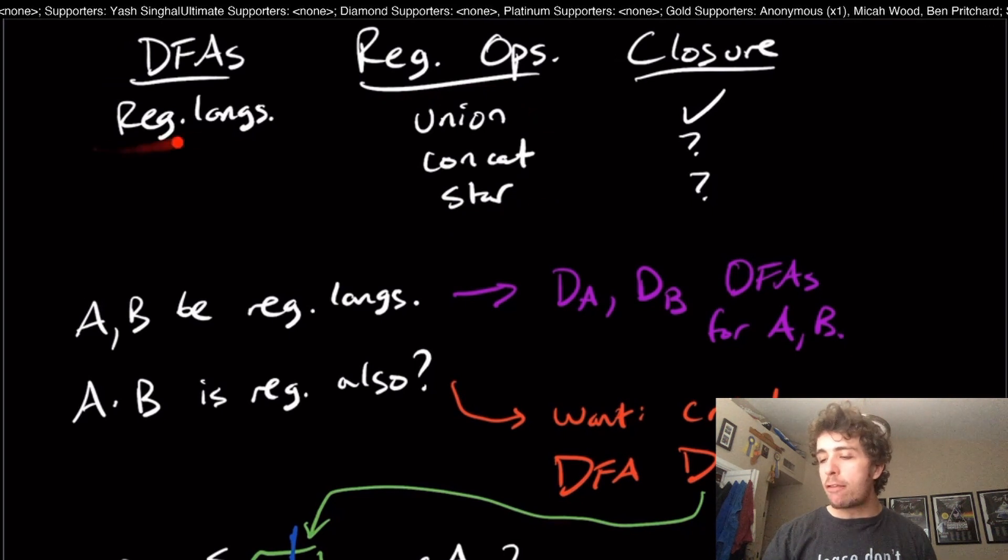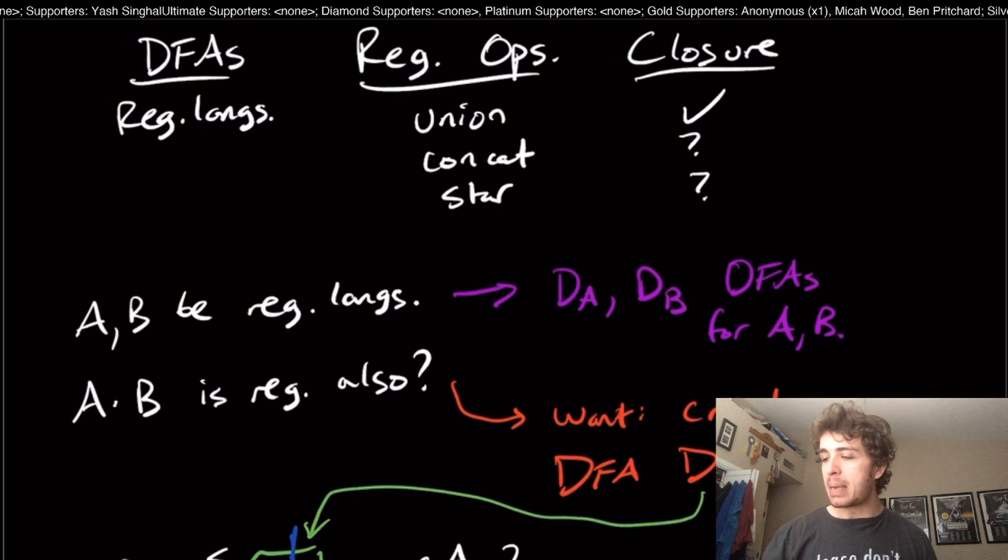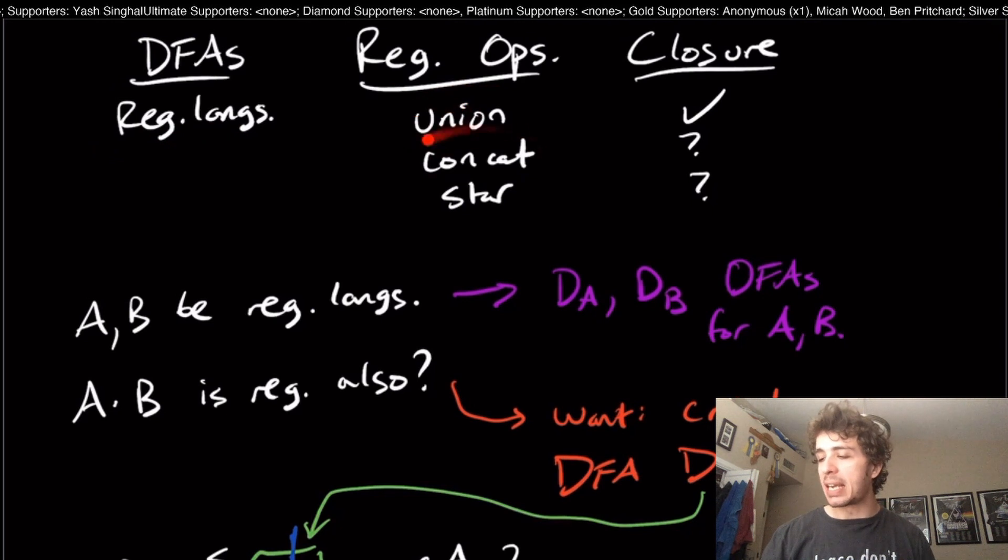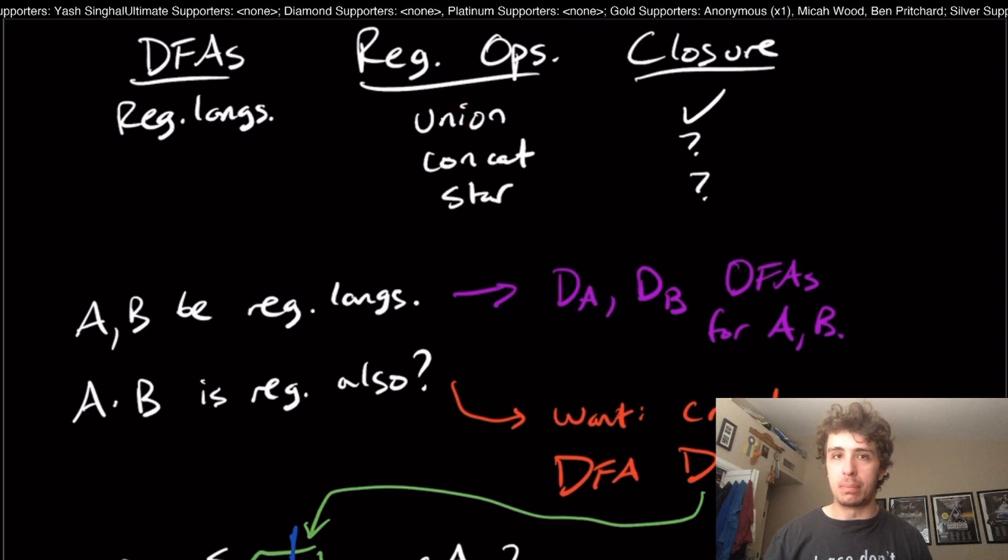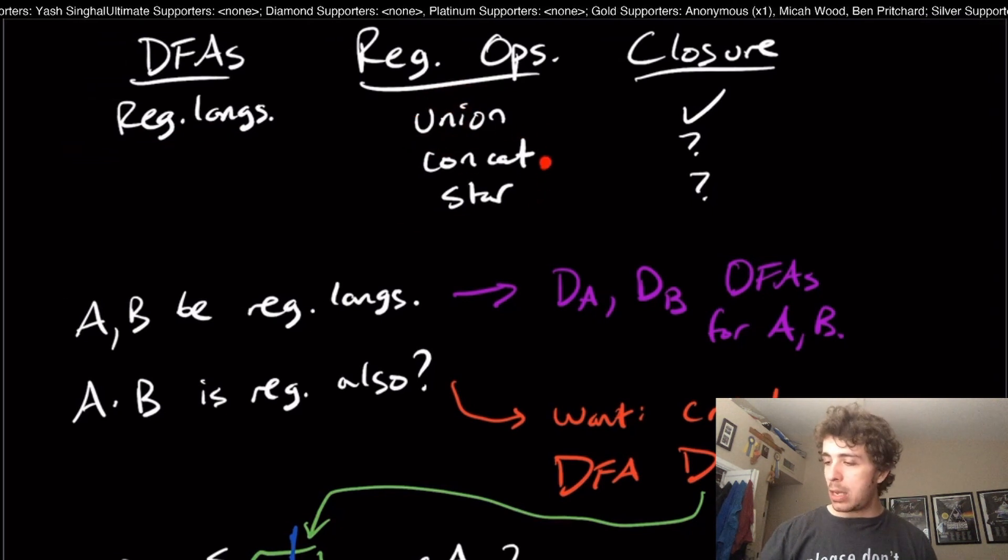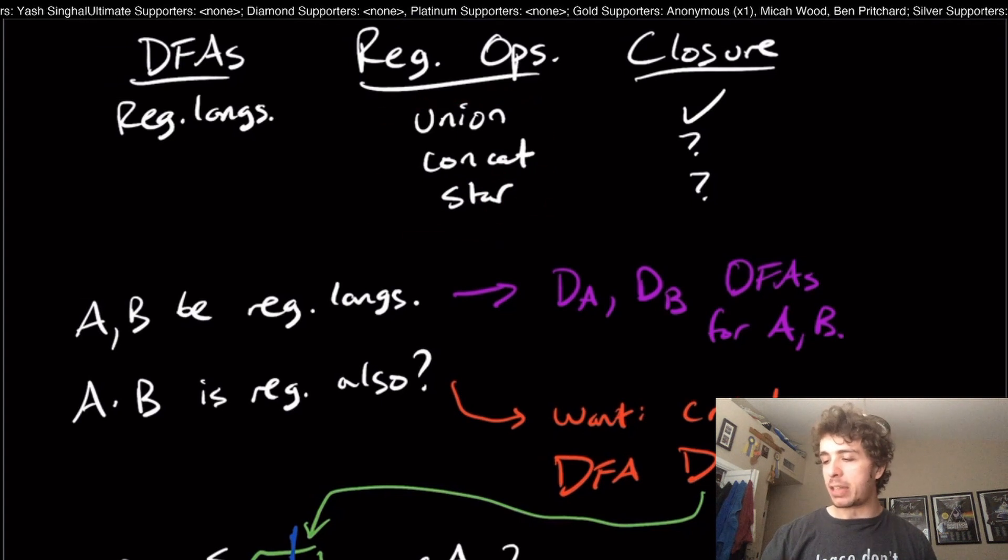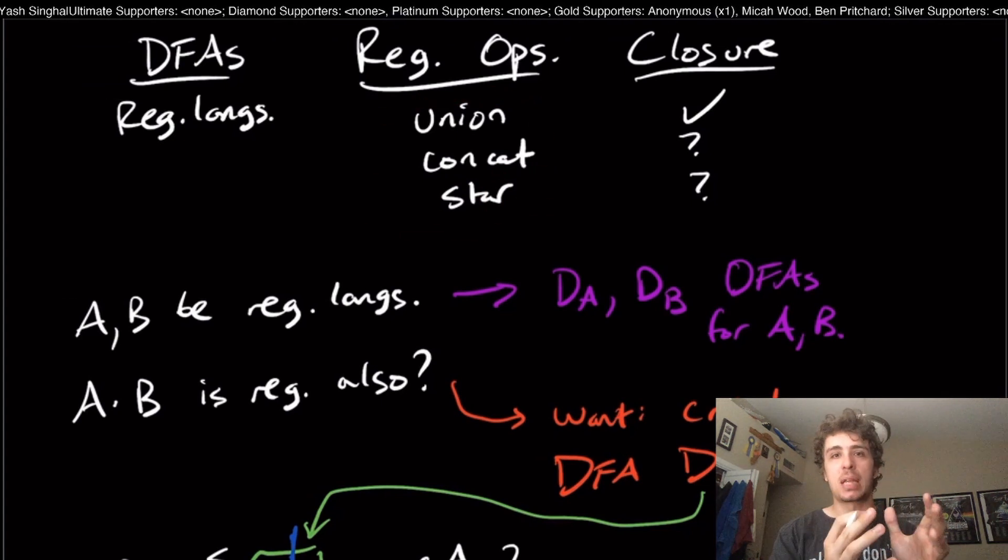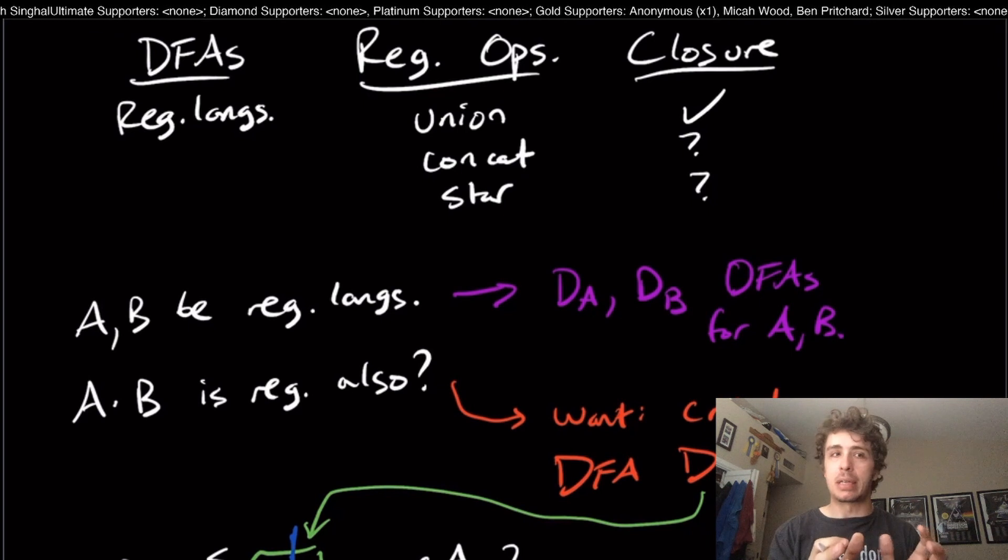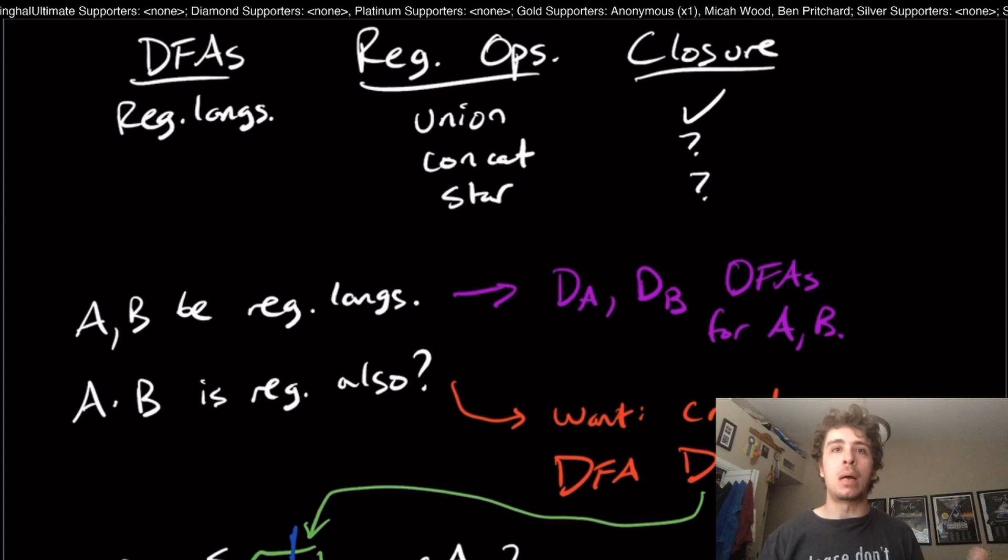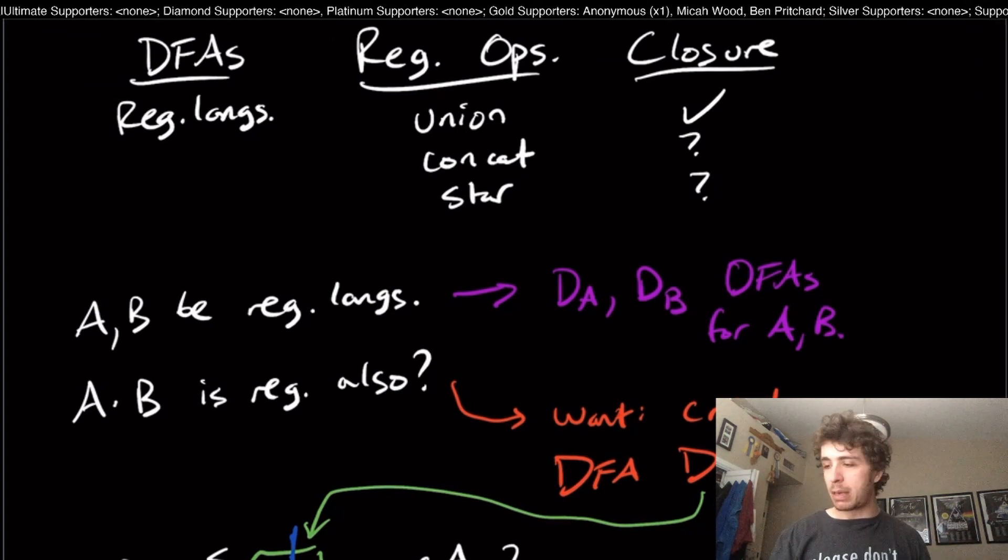Another amazing fact that we'll eventually see is that every regular language can be composed of unions, concatenations, and stars some number of them. That's the reason why we care about these: because they break up this complicated problem that we don't know necessarily how to solve into simpler problems that we do know how to solve.